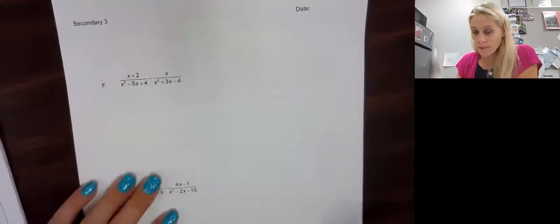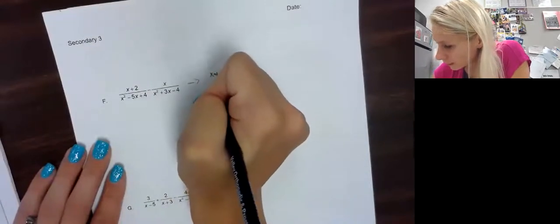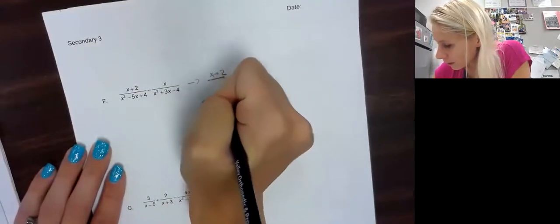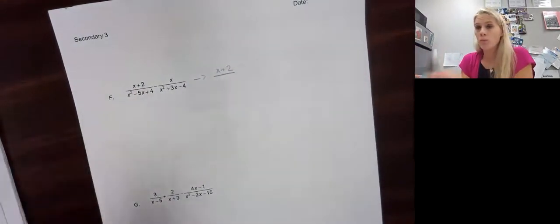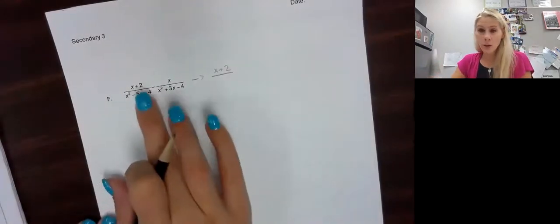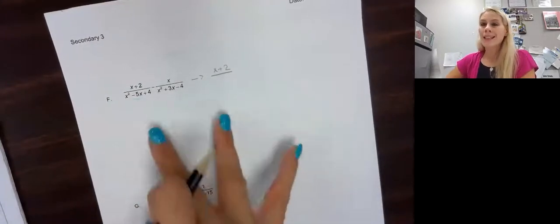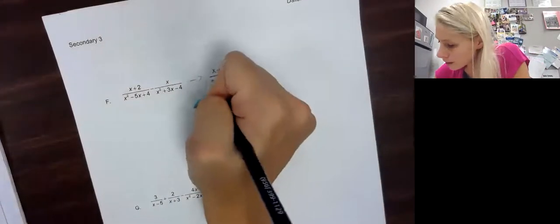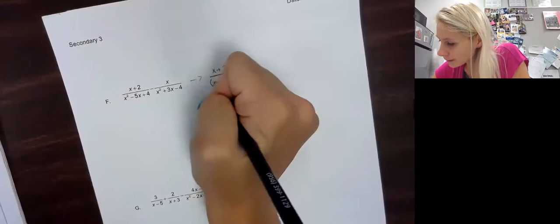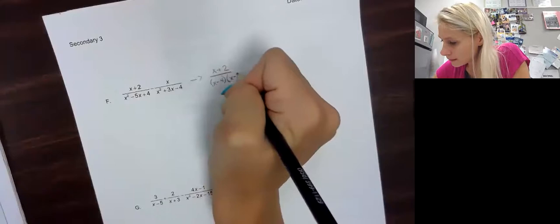From that first step, what do we do? We need to factor. So I have x plus 2 over — now for those of you who need to practice your factoring, you can pause the video and factor this trinomial to see if you get it right. I'll do it quickly: this would be x minus 4 times x minus 1.